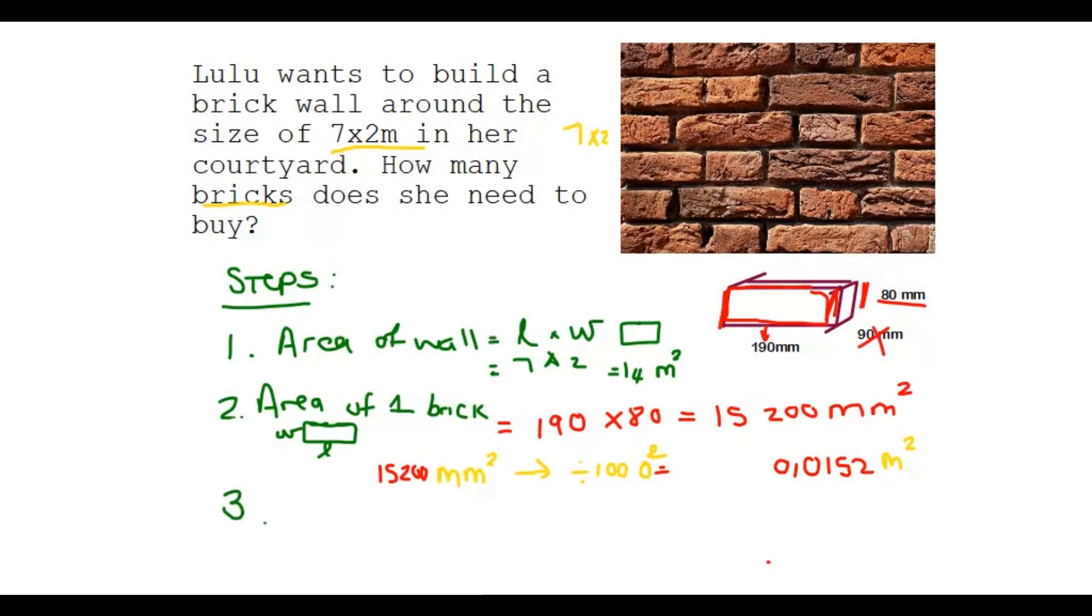We say, the area of the wall, divided by the area of one brick. So it's the answer at number one, which is 14 squared meters, divided by the answer that we got at number two, after we converted it, 0.0152 square meters. And you'll find that the units actually cancel out, right? They cancel as you're dividing. That's a little extra info.